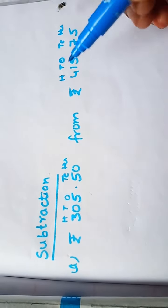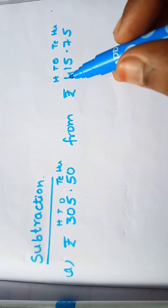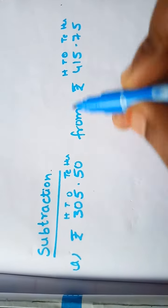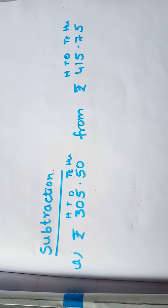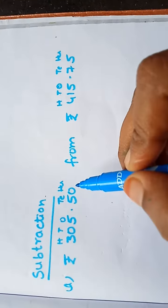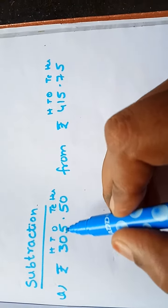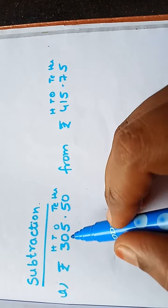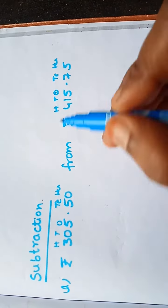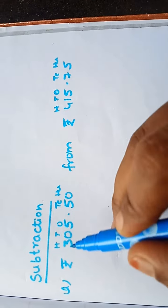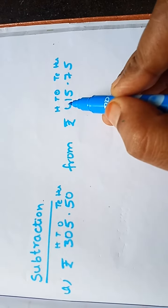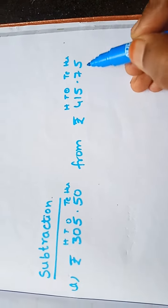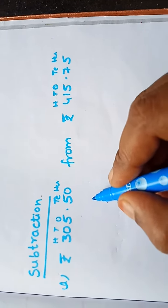Which is the big number? Look at the highest place value — the hundreds place. One number has 3 in the hundreds place and the other has 4 in the hundreds place. Four is greater than three, so the number with 4 in the hundreds place is the bigger number. Write the big number first.